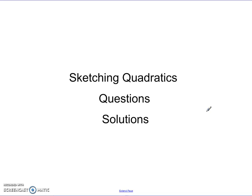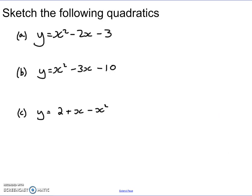In the previous video, I posed three questions on sketching quadratics, asking you to sketch the graph of three different equations. What I'm going to do in this video is go over these questions with you, show you how to work them out, and make sure we know the key points. Just a quick refresher — sketch the following quadratics: y equals x squared minus 2x minus 3, y equals x squared minus 3x minus 10, and y equals 2 plus x minus x squared. Let's have a go at these.